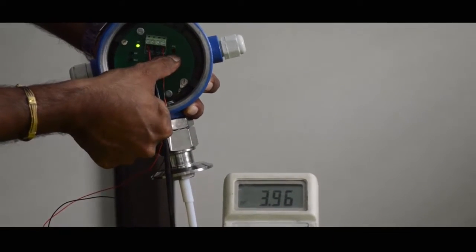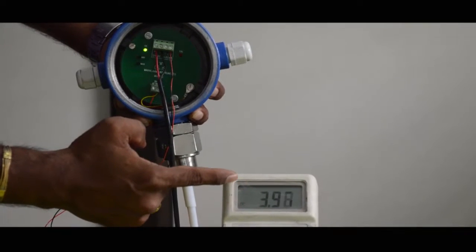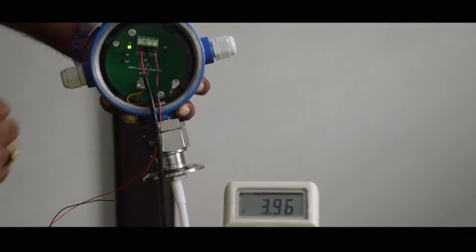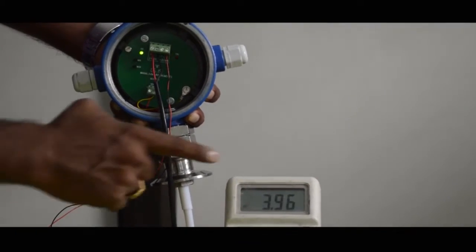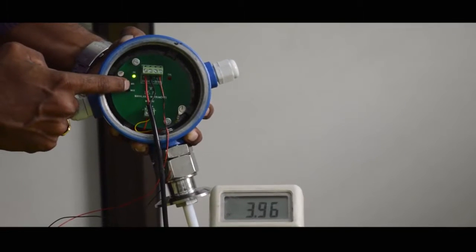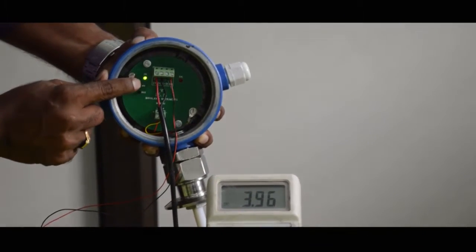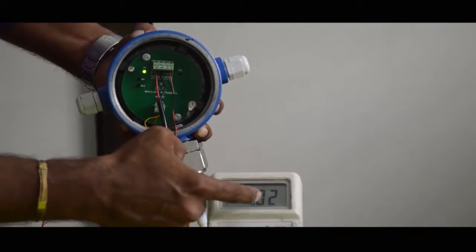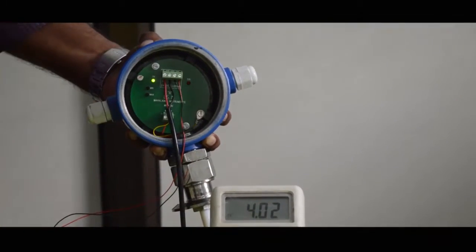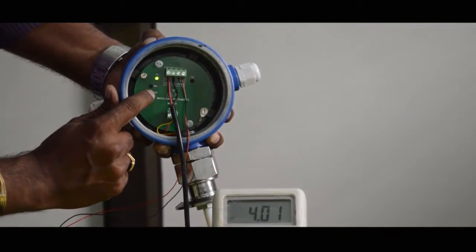The calibration LED is blinking and here we should see the value of 4 milliampere, but here it is showing 3.96. So we need to set this value to 4 milliampere. If I press the upper button, the value will increase. Now it's 4.02. I want to reduce the value. I want to make it perfect 4, so I will press the lower button once.